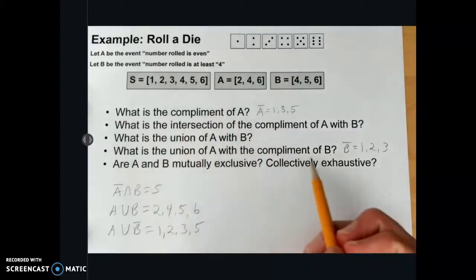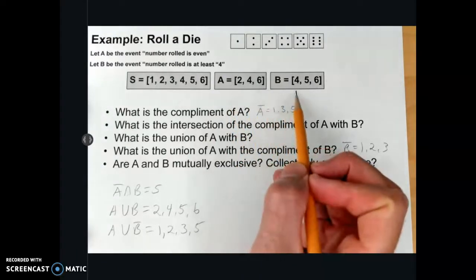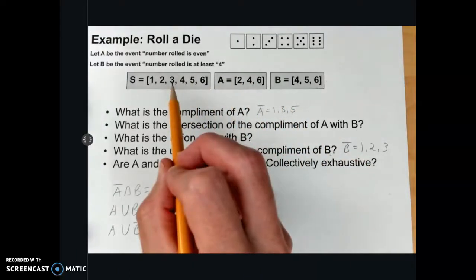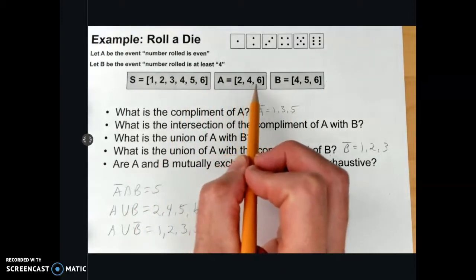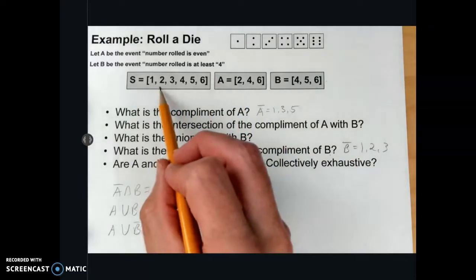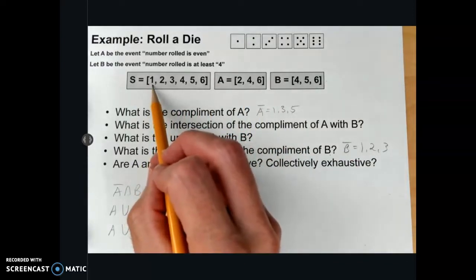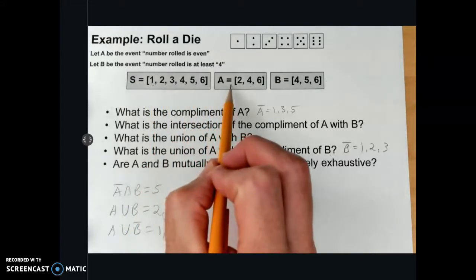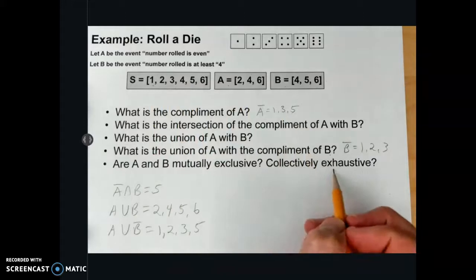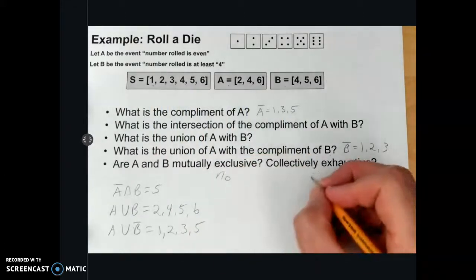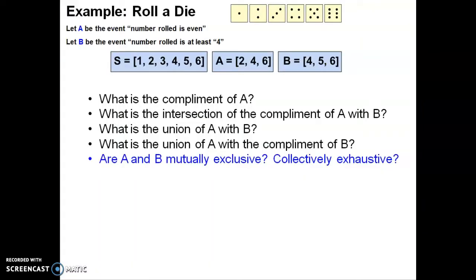Are they collectively exhausted? Well, for that, A and B would have to make up the entire sample space. And you'll notice that 2, 4, 5, and 6 are in there, but 1 is not. Therefore, you would still have something in your sample space even after accounting for event A and B. So no, they are not collectively exhausted. No mutual exclusivity, no collectively exhausted outcomes.